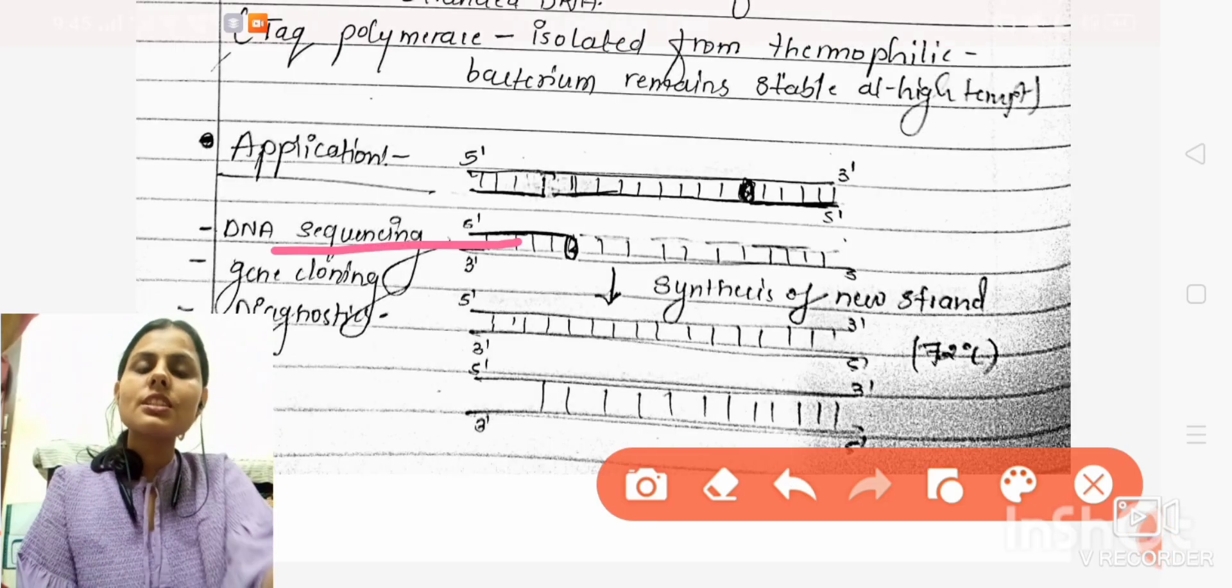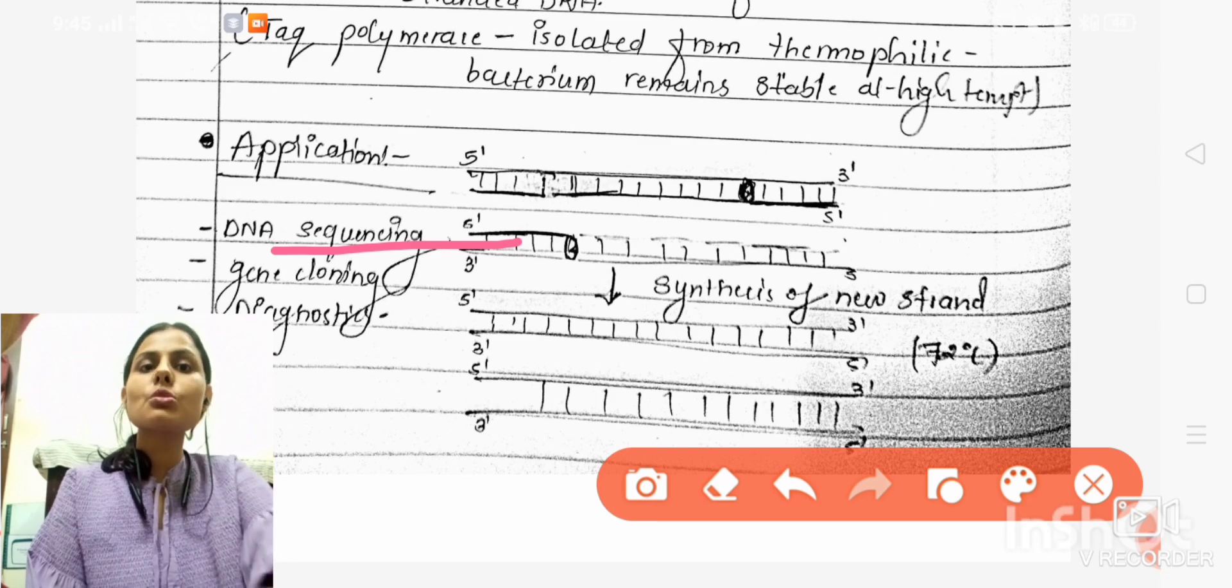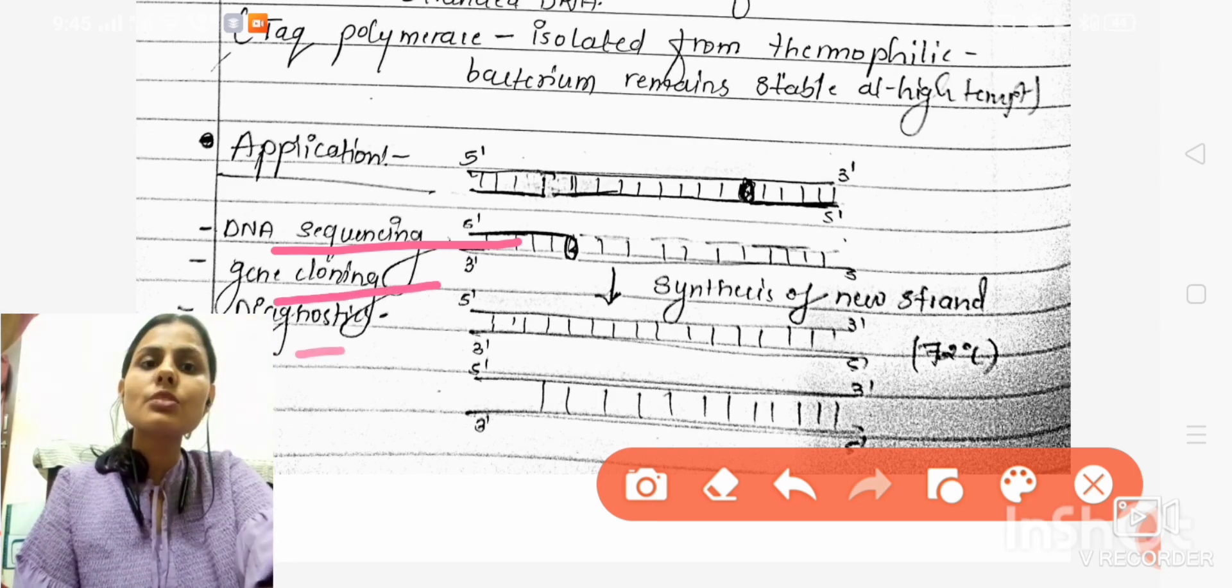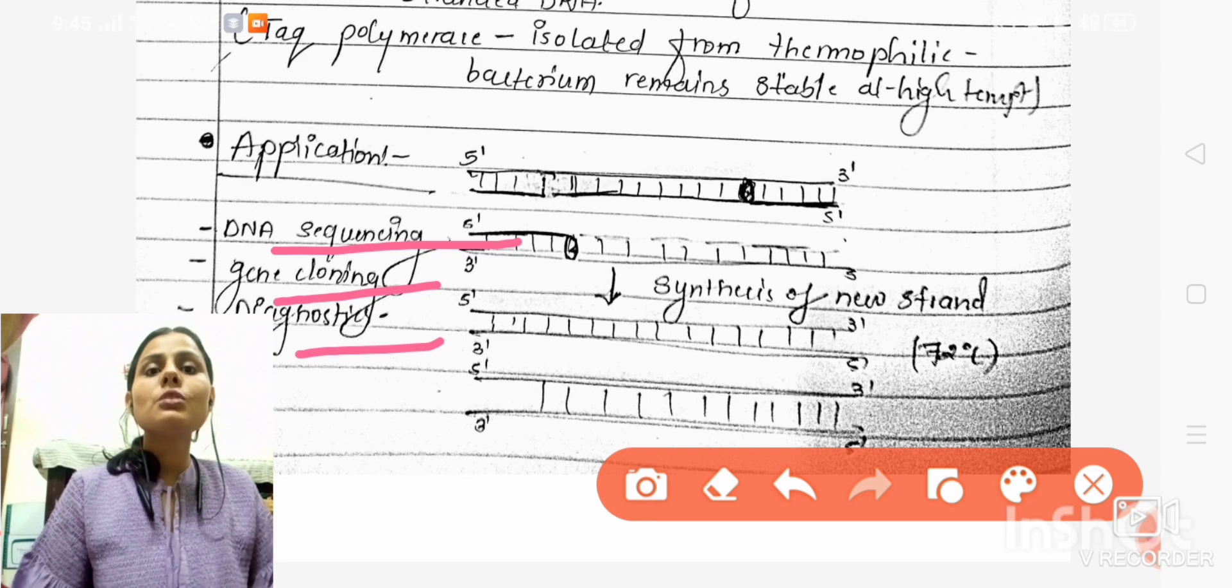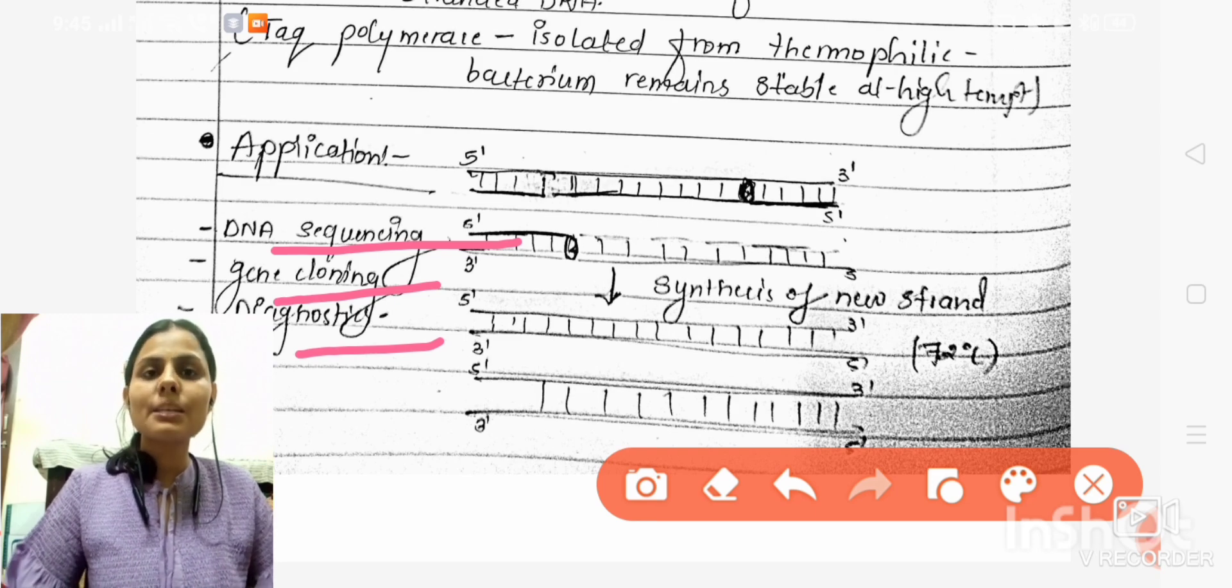Polymerase Chain Reaction is used for DNA sequencing, gene cloning, and for diagnostic purposes in the diagnosis of various diseases. PCR plays an important role in these applications.